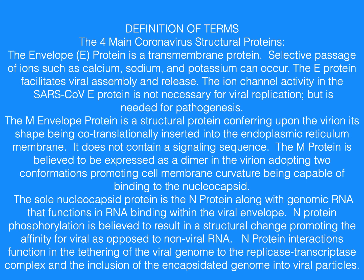The four main coronavirus structural proteins. The envelope E protein is a transmembrane protein. Selective passage of ions such as calcium, sodium, and potassium can occur. The E protein facilitates viral assembly and release. The ion channel activity in the SARS-CoV E protein is not necessary for viral replication but is needed for pathogenesis.